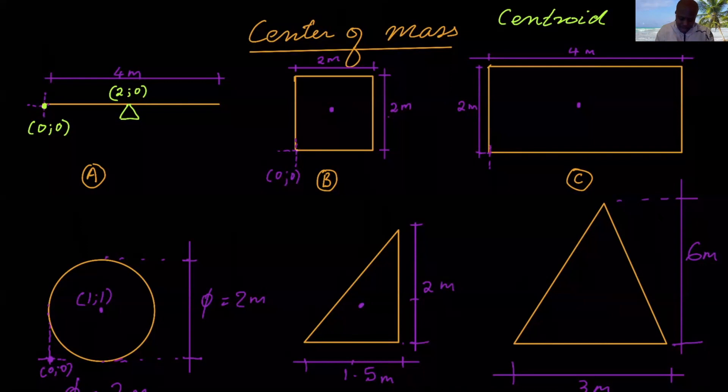Again, we choose the bottom left corner as our reference point, point 0, 0. The center of mass or the centroid in this case will be at point, shout it out if you know. Anyone? Just unmute yourself. It's point 1 and 1. So it will be 1 along the x and then 1 in the y.